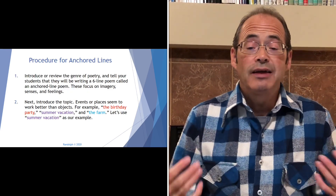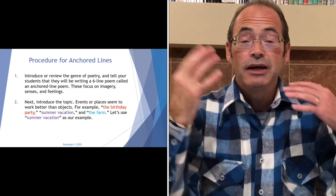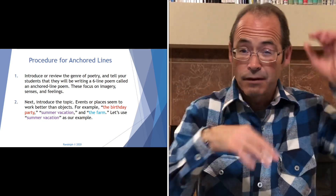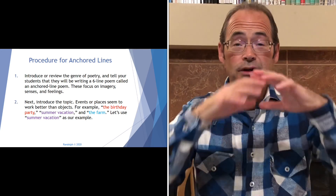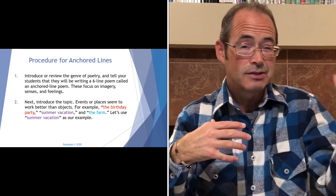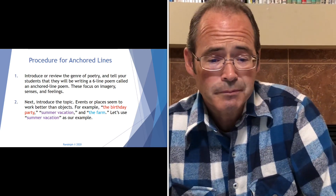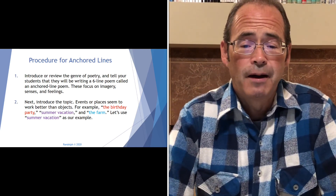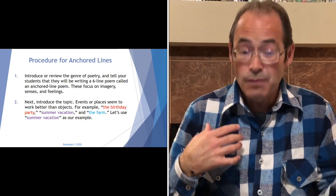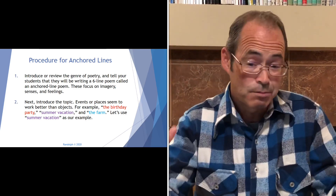The procedure for the anchored lines is the following. Step one: introduce or review the genre of poetry. If the students haven't done it already you can introduce poetry, but more than likely they will have done some kind of poetry activity. You can review poetry ideas and then tell your students that they will be writing a six-line poem called an Anchored Line Poem — these focus on imagery, senses, and feelings.